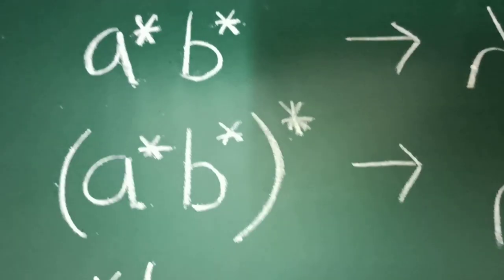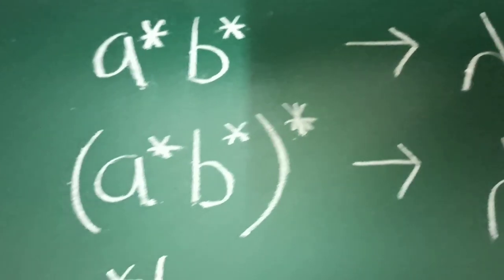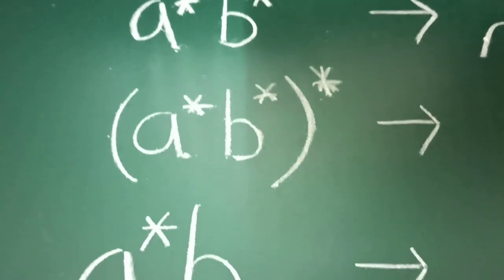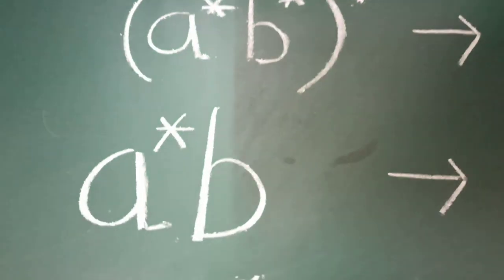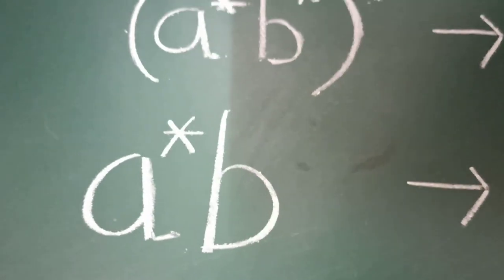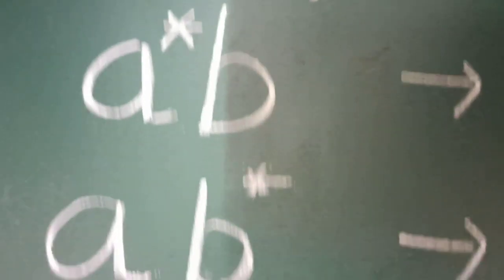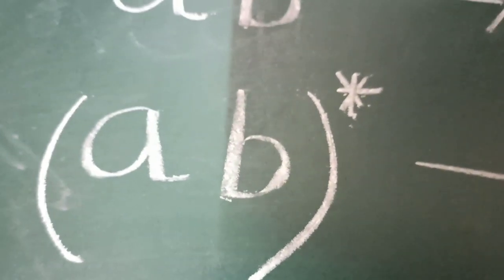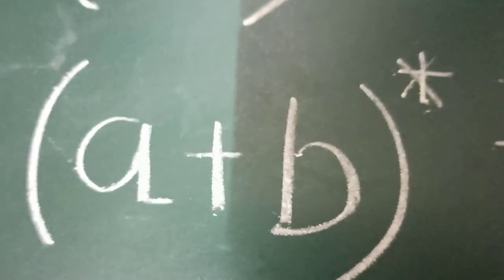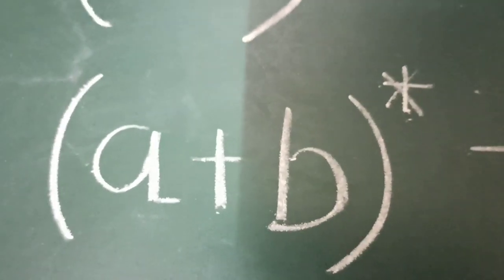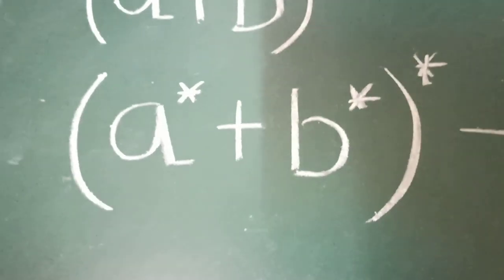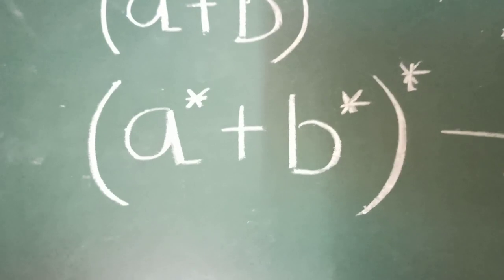First one is A* B*. After that A* B* then whole star. Then it is A* B. After that AB whole star, then AB whole star. Here A plus B whole star. Here A* B* then whole star.